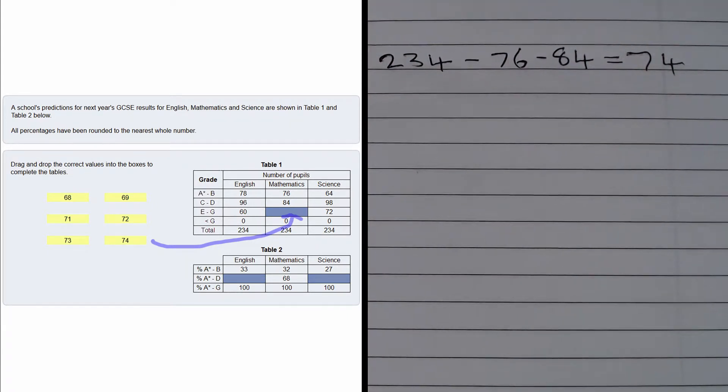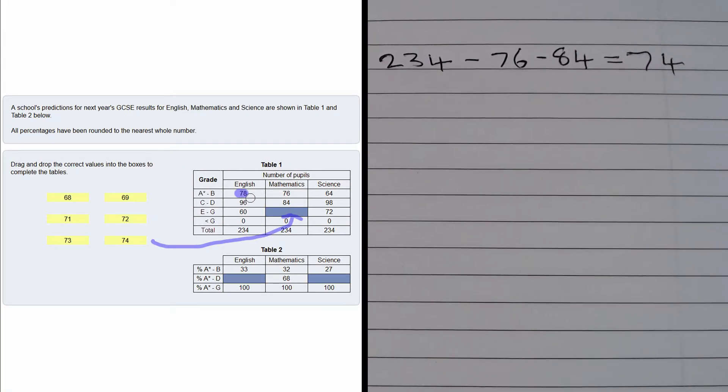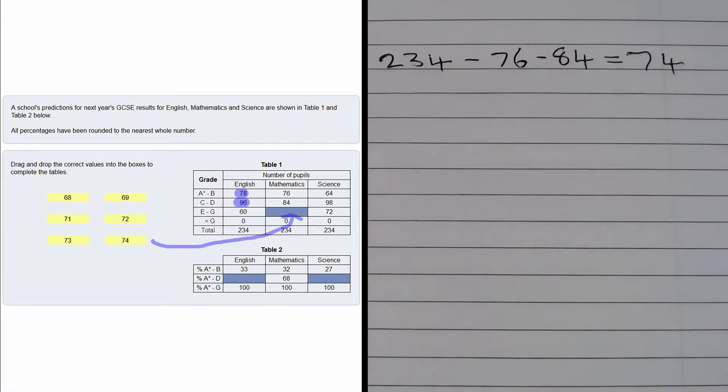Let's look at A* to D. From the English table, we have 78 plus 96, which is 174 pupils who got between an A* and a D.